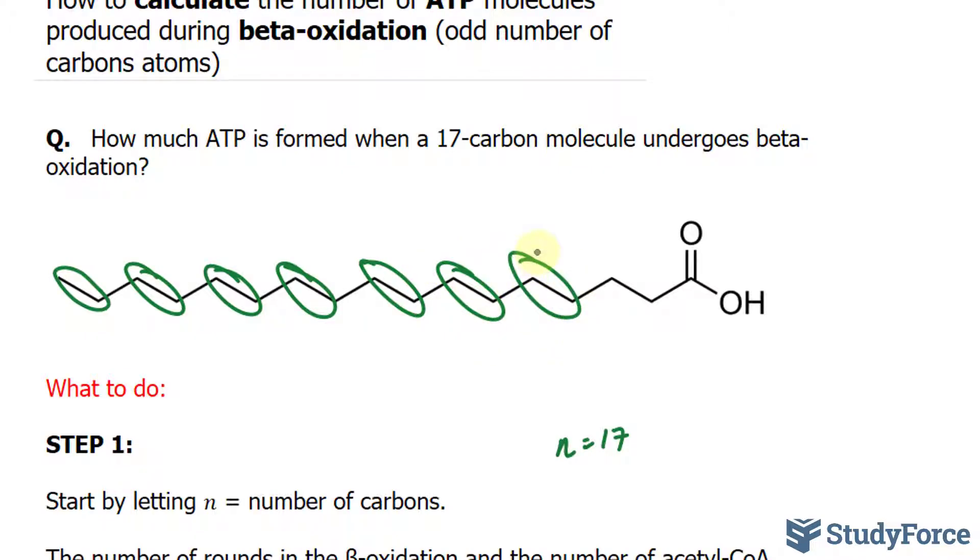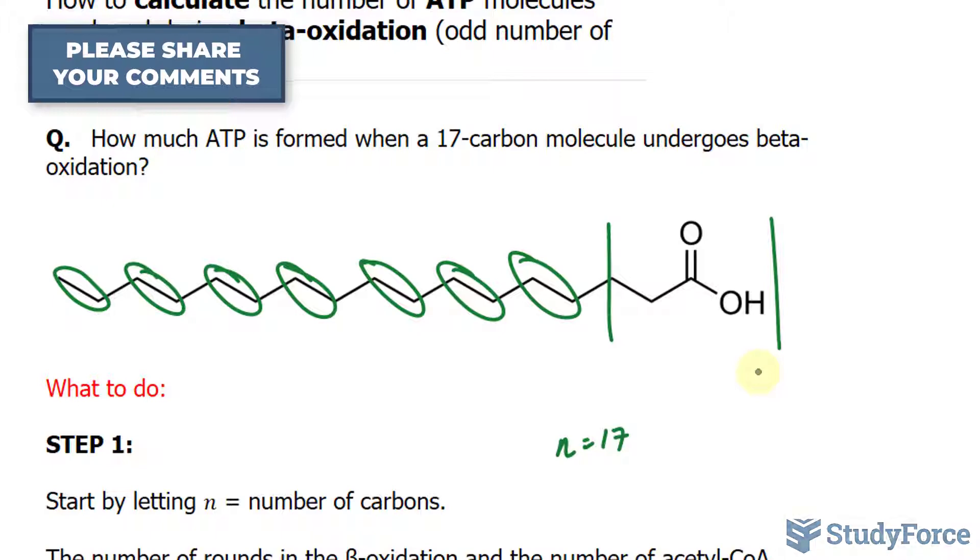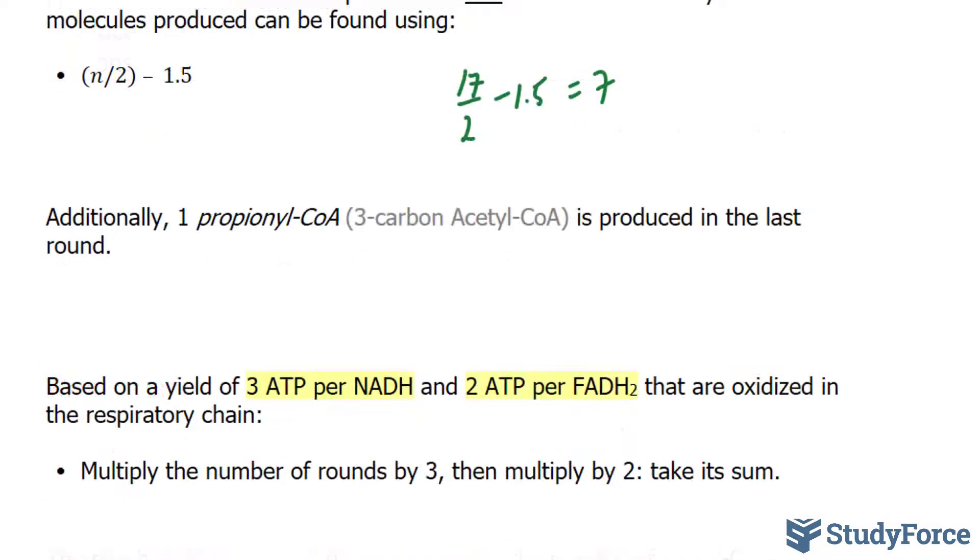And in our eighth round, you can't break this down any further. Instead, you have a three carbon molecule. This three carbon molecule is called propionyl-CoA, and propionyl also gets attached to coenzyme A, forming propionyl-CoA. I've written that information right here, and that's produced in the last round.